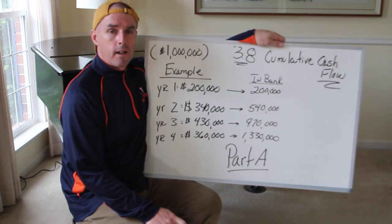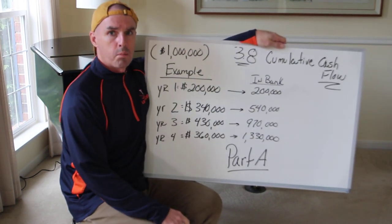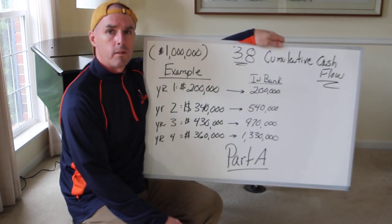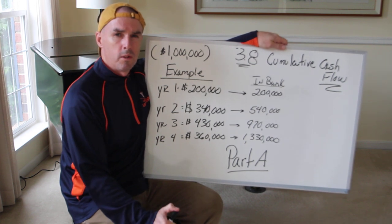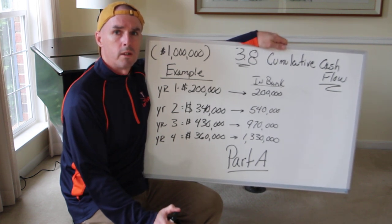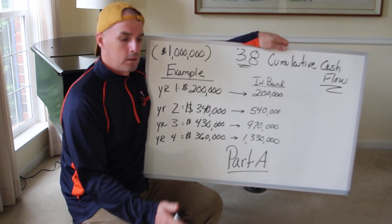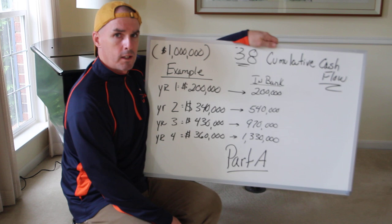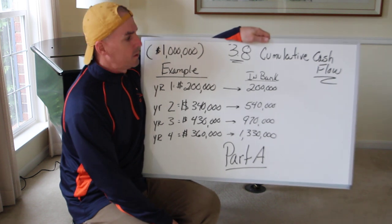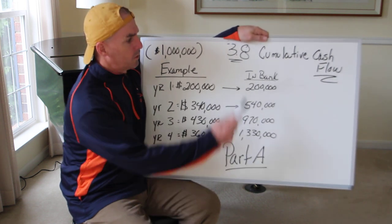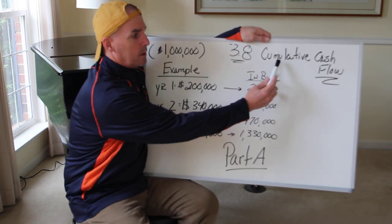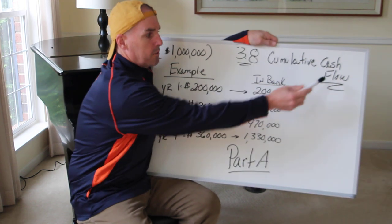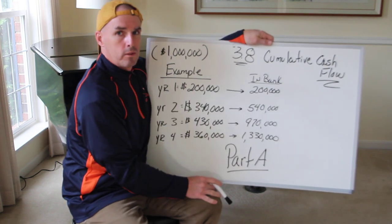All right, welcome back. Here's the second problem that we're going to see when we do assignments for a grade for NOVA. So once again, we're in unit 3.8. We're going to call this cumulative cash flow.